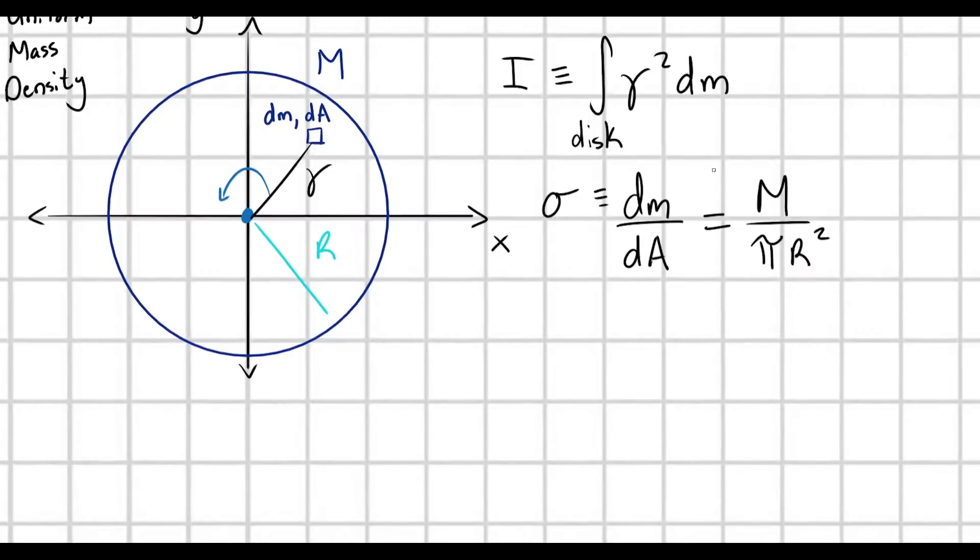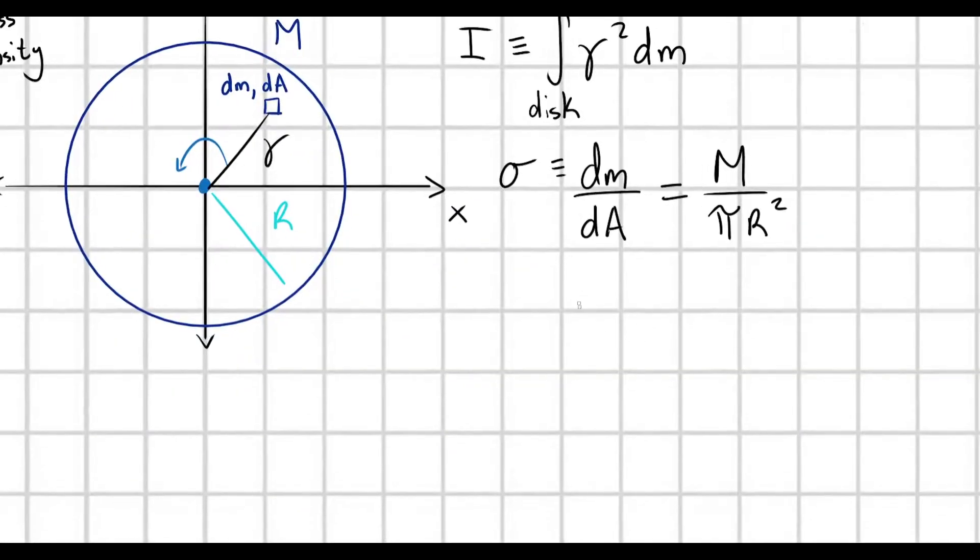This is going to be defined as my little infinitesimal change in mass per each little change in area. And because we have a uniform disk, this is equal to my total mass divided by the total area of my disk, which is pi r squared. So, let's go ahead and rewrite this. If I know that sigma times dA equals dm, I'm really just rearranging this first statement here. You can almost think of it as multiplying both sides by dA. Although, mathematicians don't like to describe it that way. That's not formally correct, but it's the same idea.